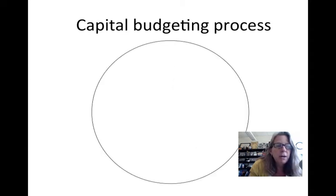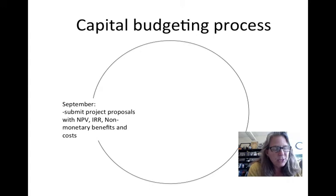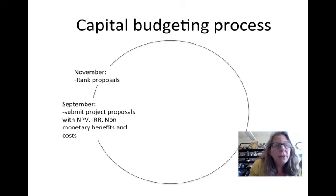Now let's look at the capital budgeting process. Every company has a yearly process for getting projects initiated. Starting in September, the lower levels of the corporation submit project proposals to the higher levels. These proposals include calculations of net present value, internal rate of return, and non-monetary benefits and costs. At the corporate level, they go through a ranking process — evaluating all proposed projects and ranking them according to strategic direction.